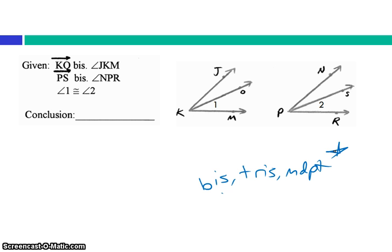So in this case, I've got KO bisects my angle on the left. So now I've got two congruent angles out of that. PS bisects my angle on the right. So I've got two congruent angles out of that. And you've also told me angle 1 is congruent to angle 2. We'll talk about this tomorrow more. But my overall conclusion is that the whole left angle is indeed congruent to the whole right angle.